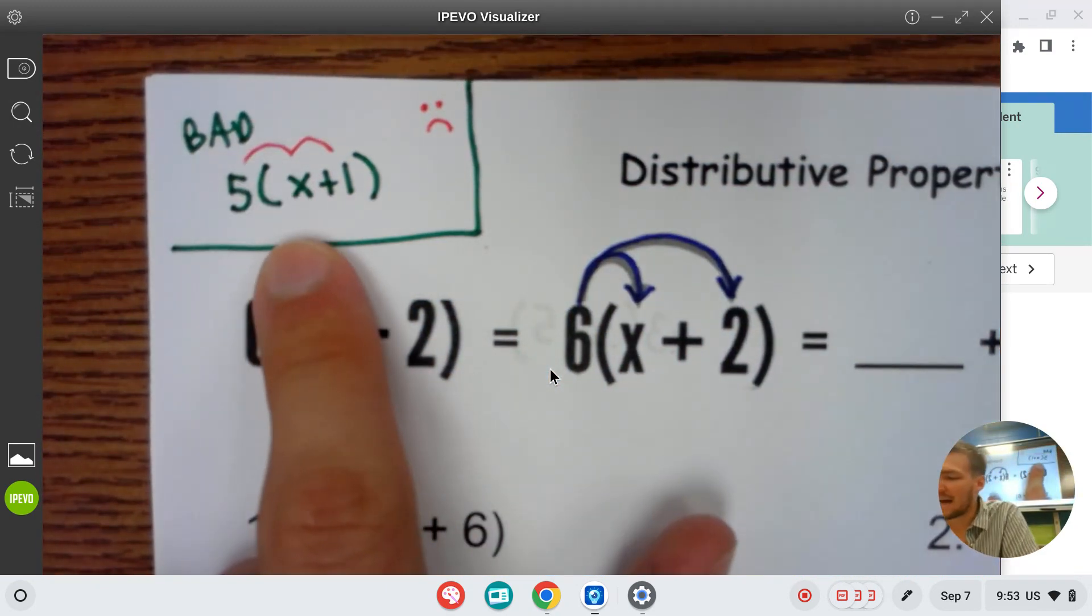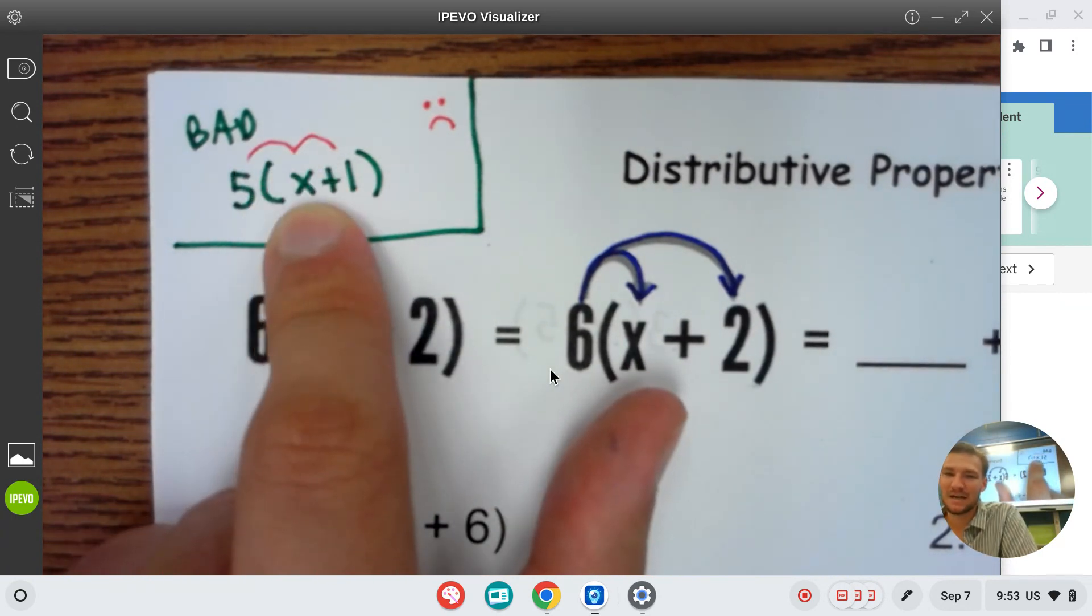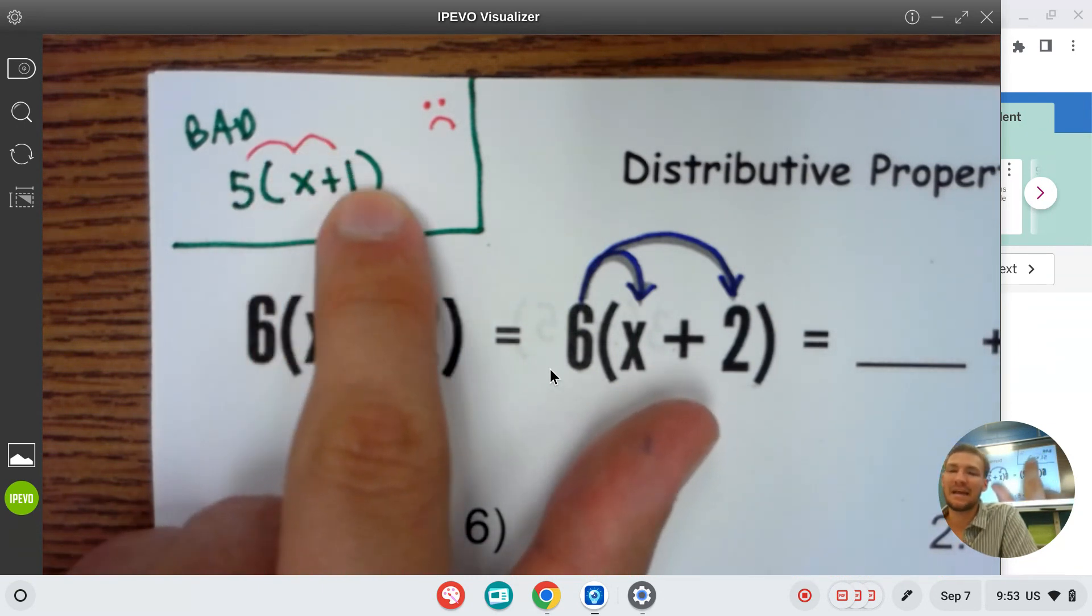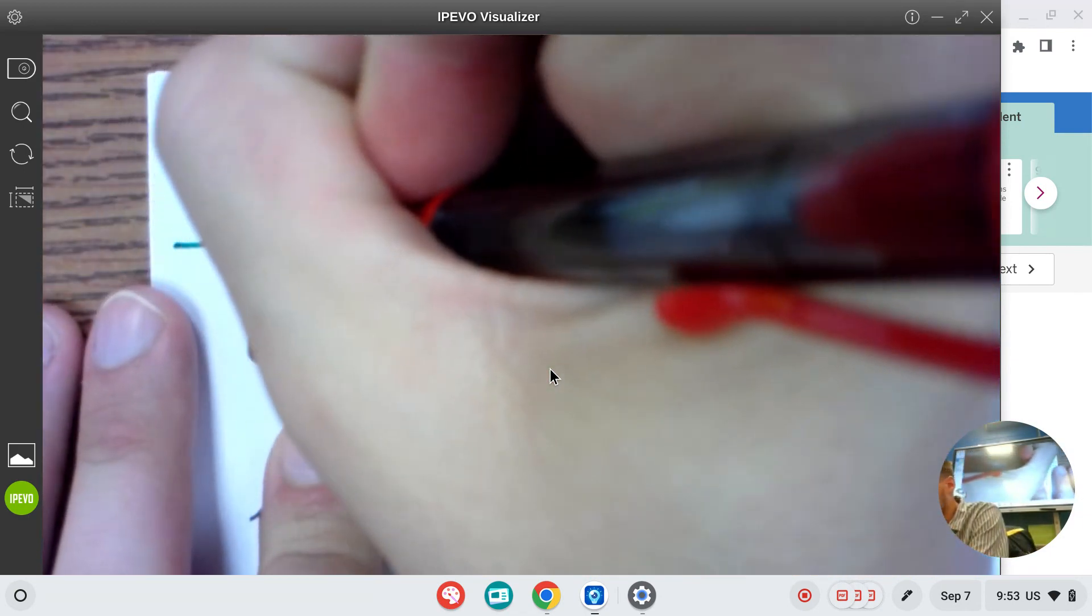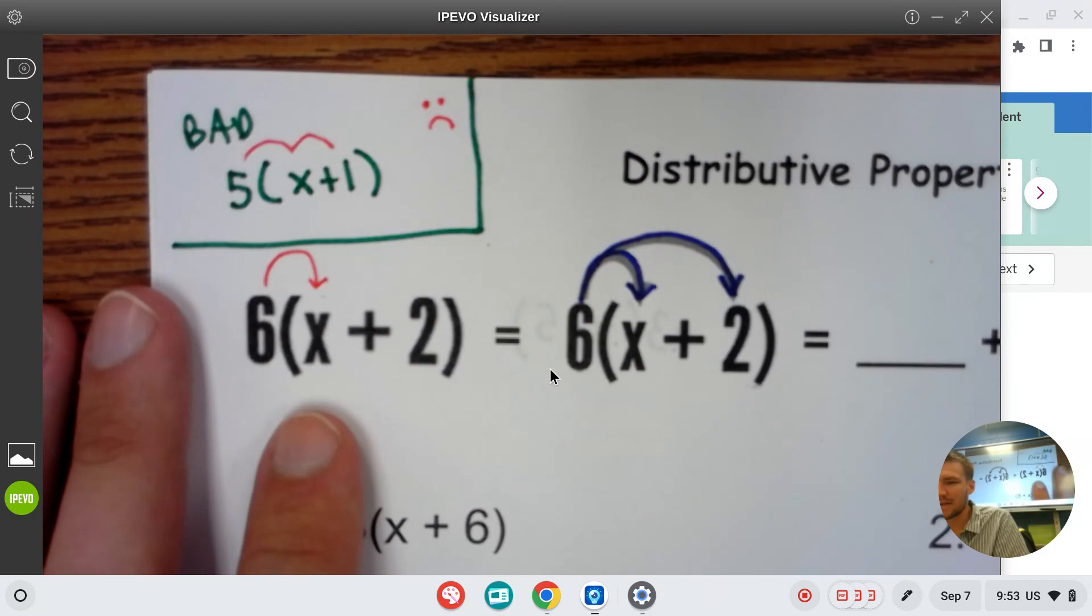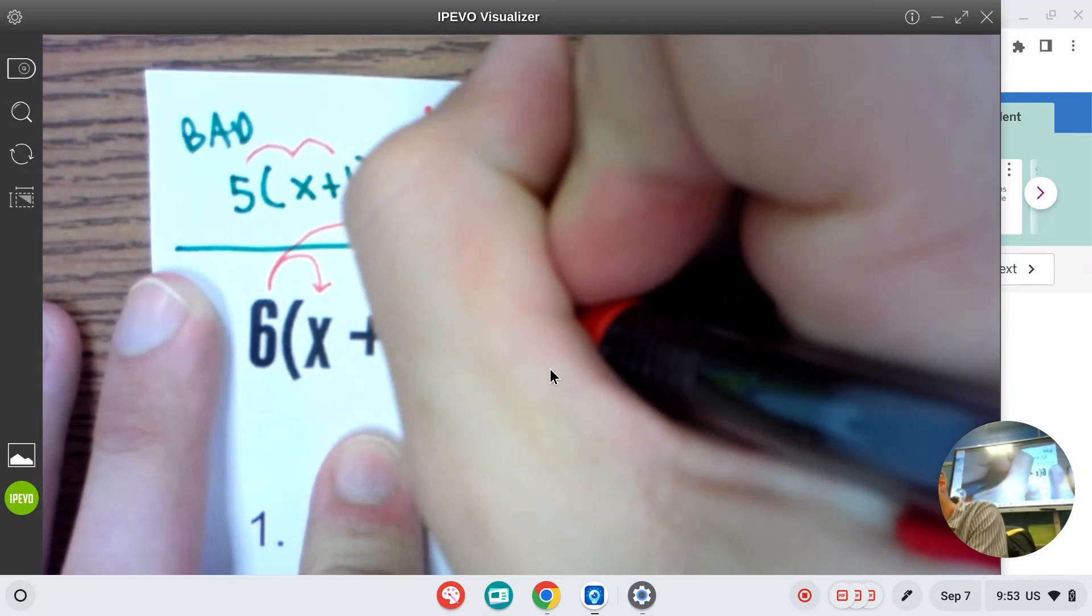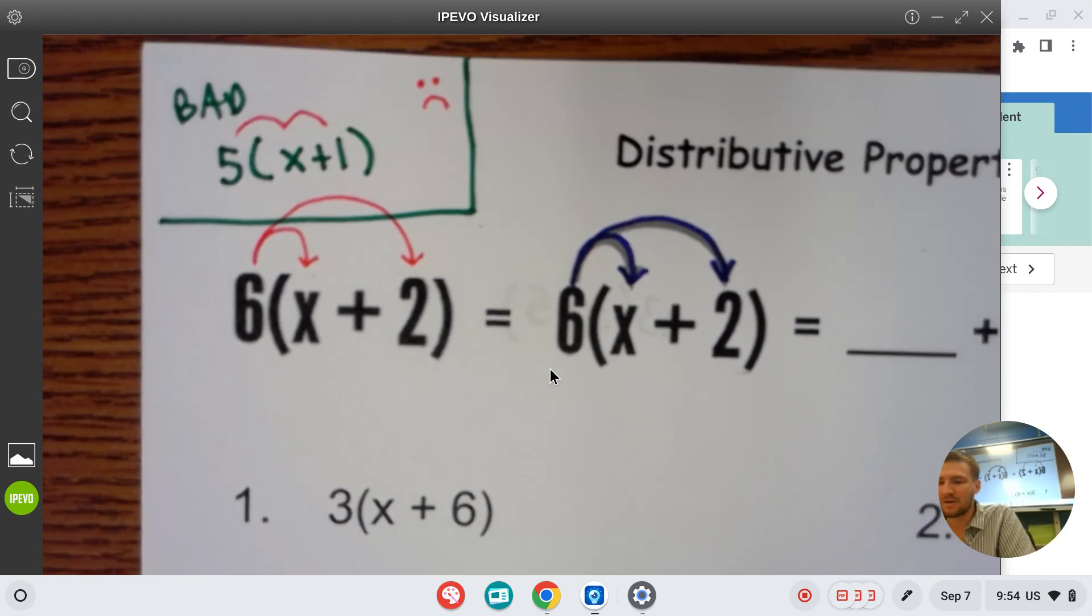Malo. We do not like to distribute with this type of arrow on top. That makes it look like the five times the x and then the x times the one. We want to make sure to draw our arrows like this. The six to the x and then pick up your pencil and start over and draw an arrow from the six to the two. I know you got to pick up your pencil for like a half second there, but don't let that be the reason that you get the question wrong.